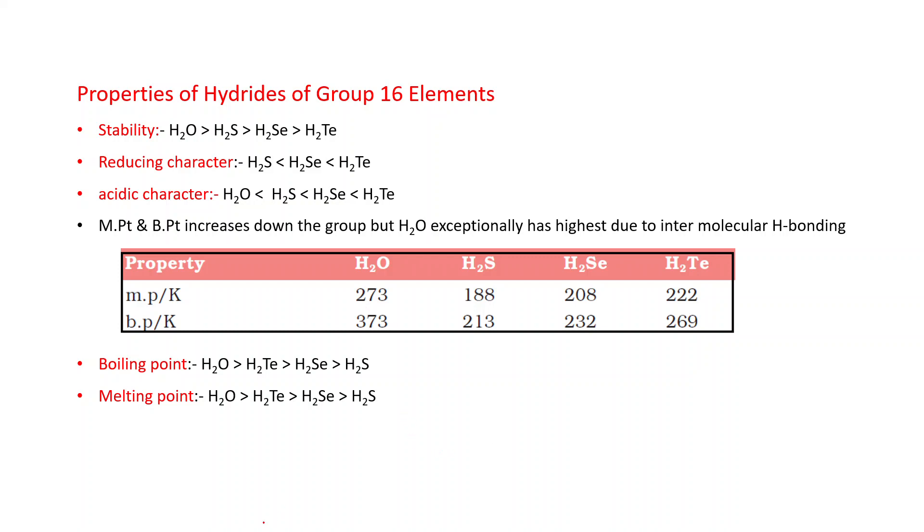These hydrides can be arranged in increasing or decreasing order as per the properties. For stability, as we discussed, H2O is the most stable and H2Te is the least stable. That's why reducing property is reverse: H2Te is most reducing while H2S is least reducing. Acidic character also increases from H2O to H2Te.